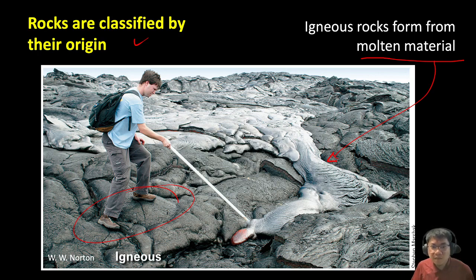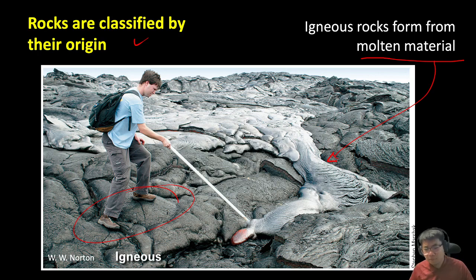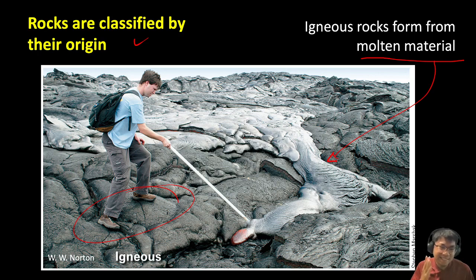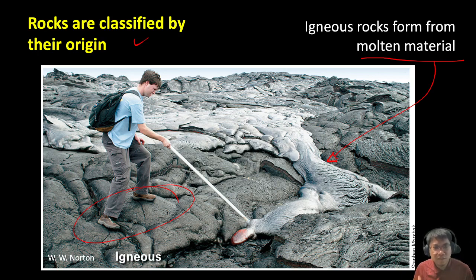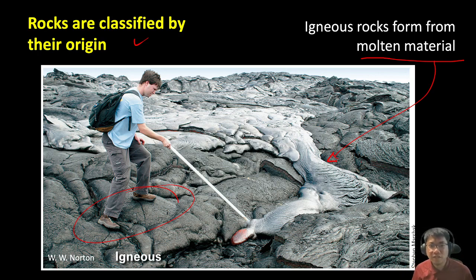This process is very similar to putting a bottle of water in a freezer — that water will solidify and become ice. That is exactly the same process with igneous rocks. Basically, you change the temperature: you drop the temperature, and this molten or liquid material will eventually become solid material.